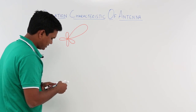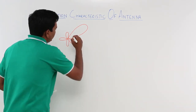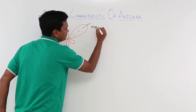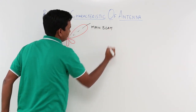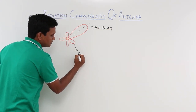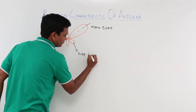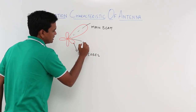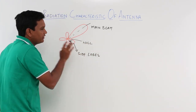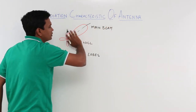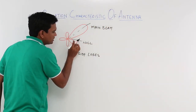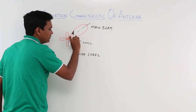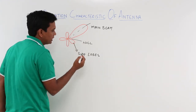If I try to understand what this is, it is nothing but what is called the main beam. This is what is called side lobes. This is what is your null — there is no field here. If any antenna is radiating in any direction, this is where the maximum effect is. The field strength will be low in the side lobes. At certain angles, the field will be zero — this is what is called a null.